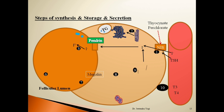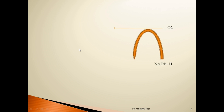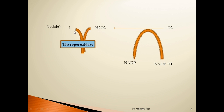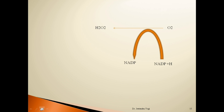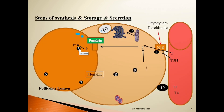This oxidation occurs via thyroid peroxidase. In the presence of the thyroid peroxidase enzyme, iodide is oxidized into iodine. This is the third step in thyroid hormone synthesis — oxidation of iodide. Thiouracils can inhibit this third step of oxidation, while thyroid stimulating hormone stimulates it. This oxidation occurs at the apical membrane of the thyroid follicular cell with the help of the peroxidase enzyme.